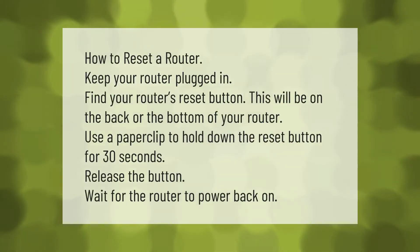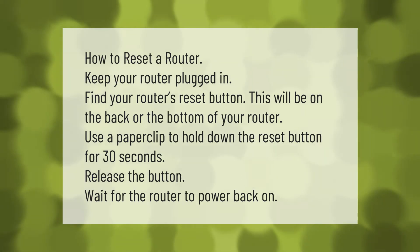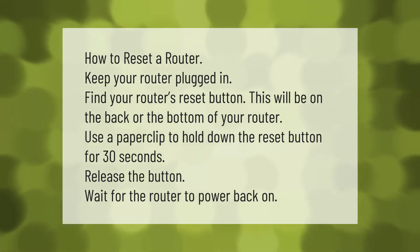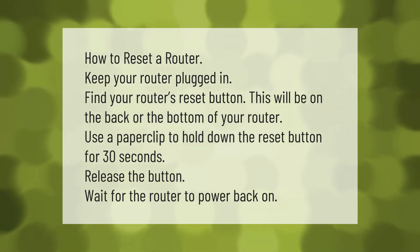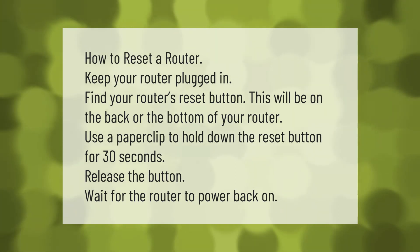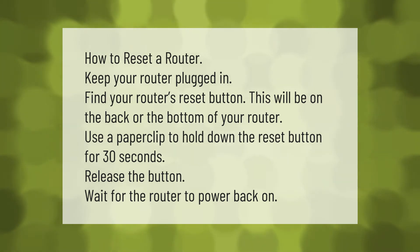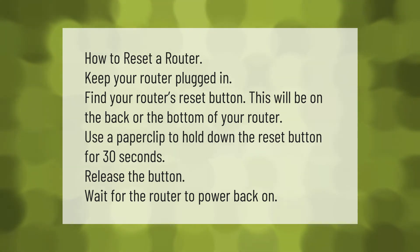How to reset a router: keep your router plugged in and find your router's reset button — this will be on the back or the bottom of your router. Use a paper clip to hold down the reset button for 30 seconds, then release the button and wait for the router to power back on.